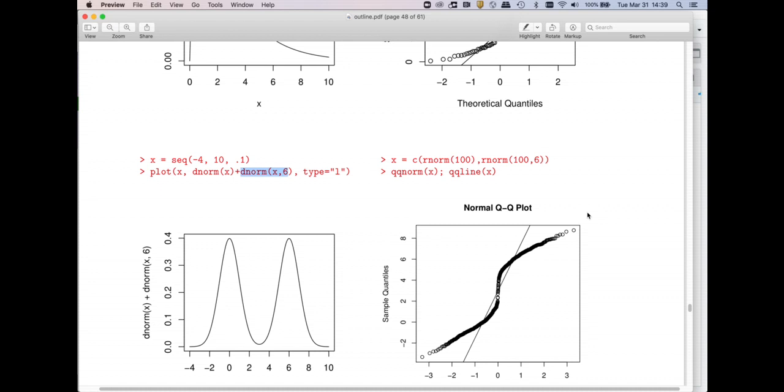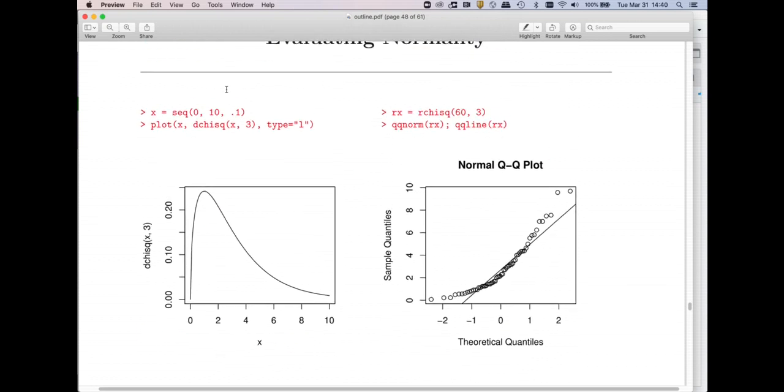That's it for this video. To detect normality or actually any distribution that you need to check against, we're going to use one of these quantile-quantile plots. If the points look like they're on a line, that's suggesting that the theoretical distribution is plausible. If they deviate from a line as they do here or here, you question it.